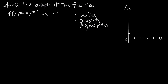To find critical points, we take the first derivative of the original function, set it equal to 0, and solve for x. Taking the first derivative f'(x): the derivative of 3x² gives us 6x — we bring the 2 down in front to get 3 times 2, then subtract 1 from the exponent. That's the power rule. The derivative of -6x is -6, and the derivative of the constant 5 is 0. So our derivative function is f'(x) = 6x - 6.